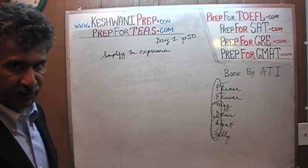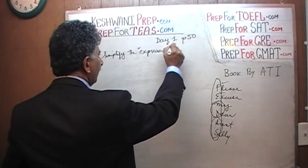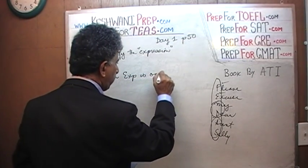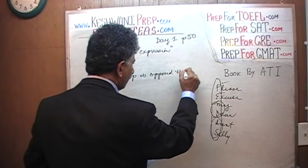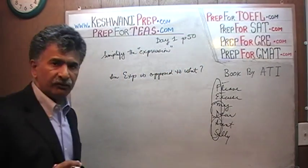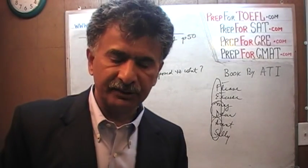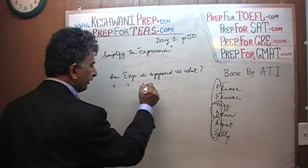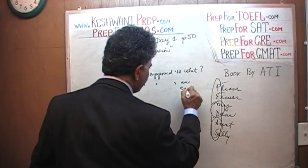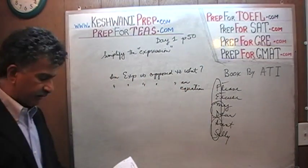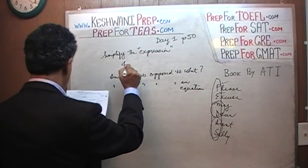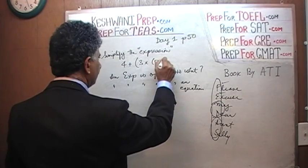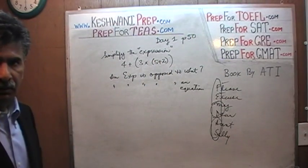Now listen, before we actually solve the problem, just digress here for a second. Can you tell me an expression, as opposed to what? Why do they refer to these things as expression? The answer is an expression as opposed to an equation. For example, 4 plus 3 times 5 plus 2, this is an expression. This is not an equation.